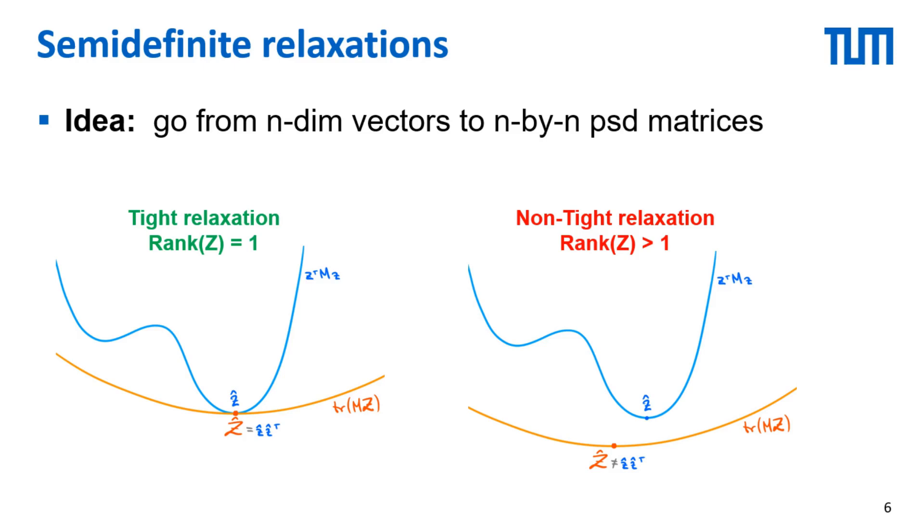When the solution has rank 2 or more, the relaxation is not tight and we are not able to recover the global optimum. However it is still often possible to generate an approximate solution although with no optimality guarantees. A key metric for the effectiveness of a relaxation is therefore the percentage of relevant problem cases where the relaxation is tight.